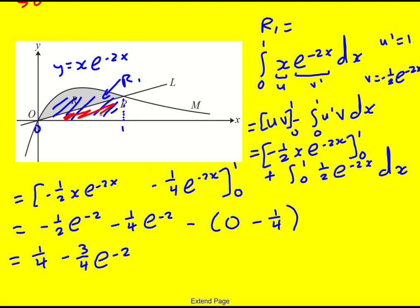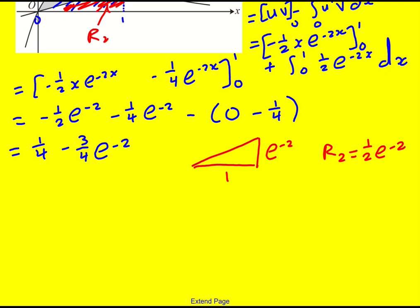And now I just need to find this red area, which I'll call r2, the triangle. So we know the base. We don't need to find the equation of the line and integrate it. It's just a triangle, find the base, find the height. So I just need to put 1 back into the original function. So the height is going to be e to the minus 2. And then r2 is going to be a half base times height. So a half e to the minus 2.